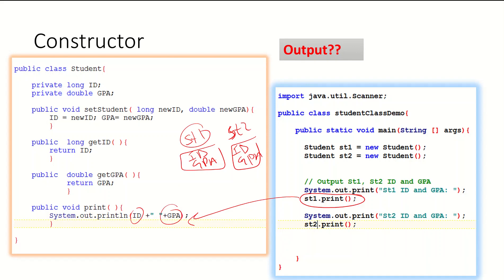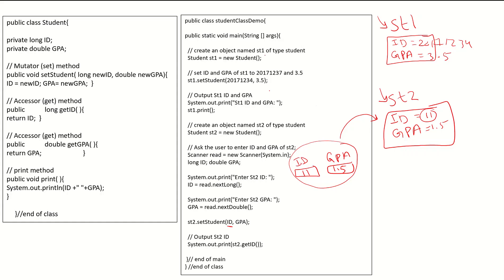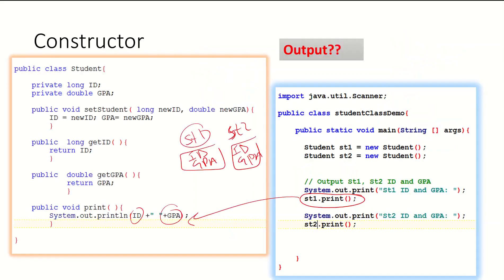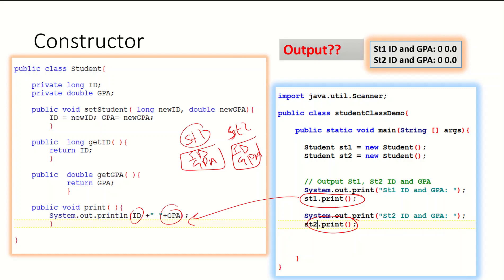In the previous example, what we did when we created st1, we used setStudent in order to initialize the values. In this case, we didn't initialize any value, but directly we are asking to do the printing. If you compile and run this program, the output you will get is zeros, because we didn't do any initialization — the compiler will initialize ID and GPA to zeros, to their default number.